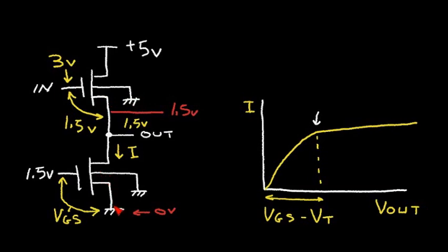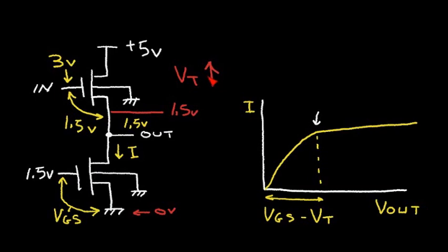The fact that the upper transistor has its source at a higher voltage actually causes the threshold voltage of that top transistor — we'll call it Vt — to increase a little bit, and that will sometimes need to be taken into account. So let's do a simulation of the source follower circuit and look at the response.